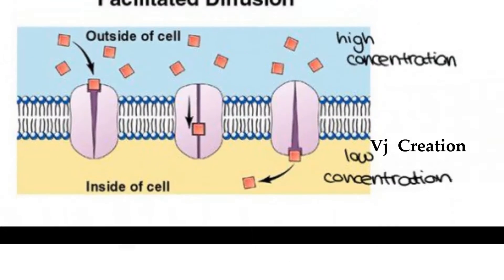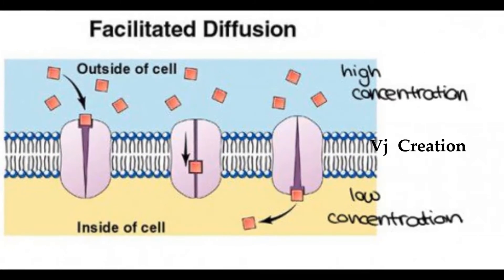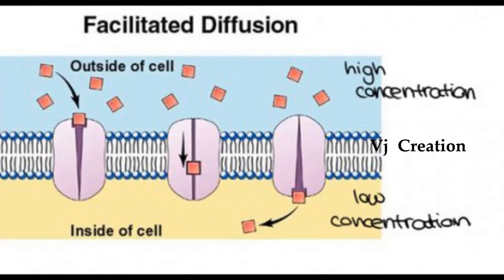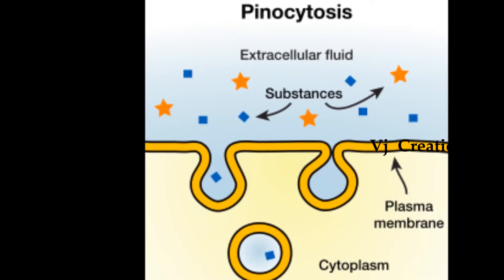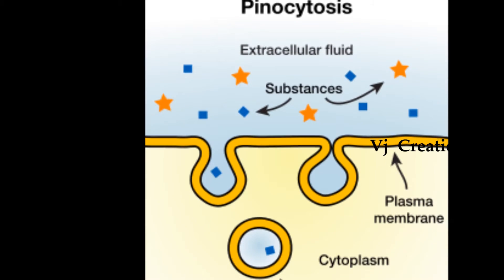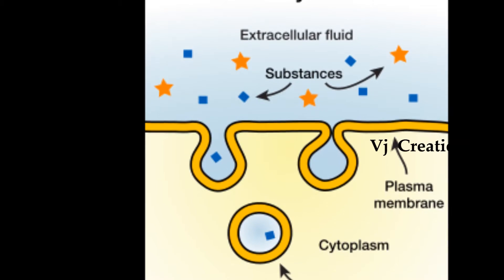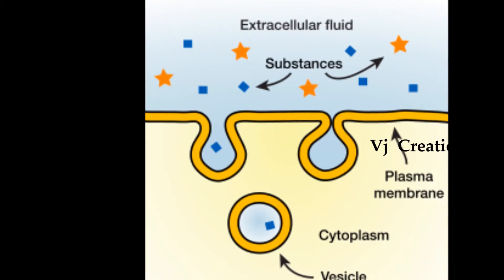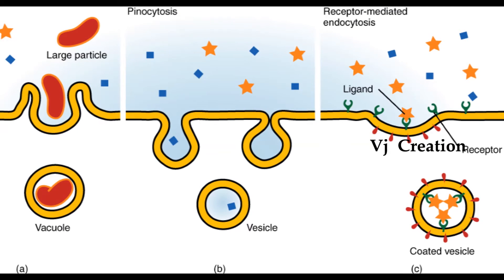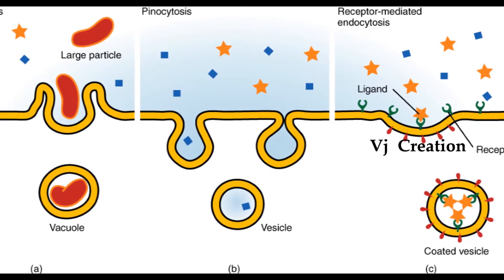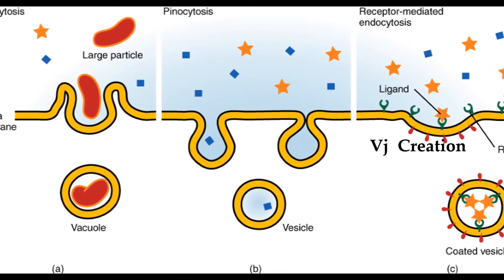Facilitated diffusion is very similar to carrier transport, but it does not require energy. Pinocytosis is a process by which molecules and macromolecules are transported. It is similar to phagocytosis, where cells engulf fluids or macromolecules from the surroundings.